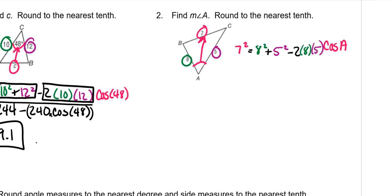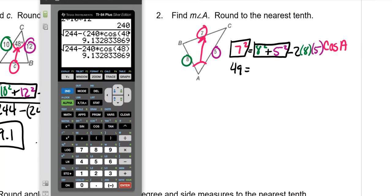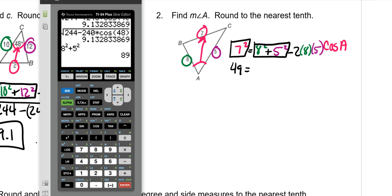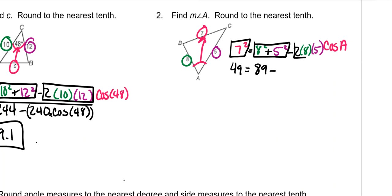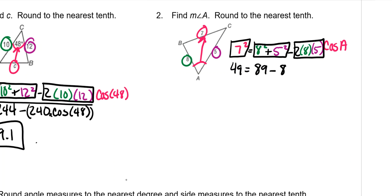So again, we're going to do this in the calculator or in our heads, because 7 squared is 49. Do this part in the calculator. So 8 squared plus 5 squared is 89 minus, and put this part in the calculator, 2 times 8 times 5, 80, cosine of A.